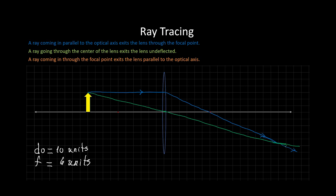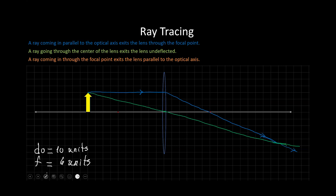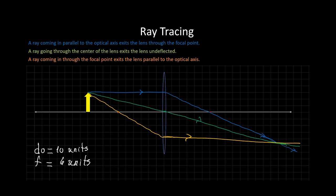And then the third one in orange, a ray coming in through the focal point exits the lens parallel to the optical axis. So let's go to orange. Here's the focal point. You're going to go through it. And then I go parallel to the optical axis. So these three rays, the green, the orange, and the blue, meet up at this point right here.